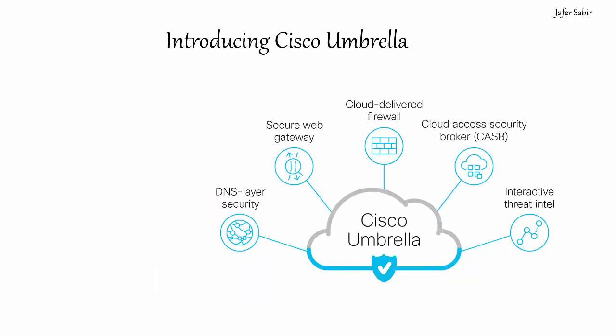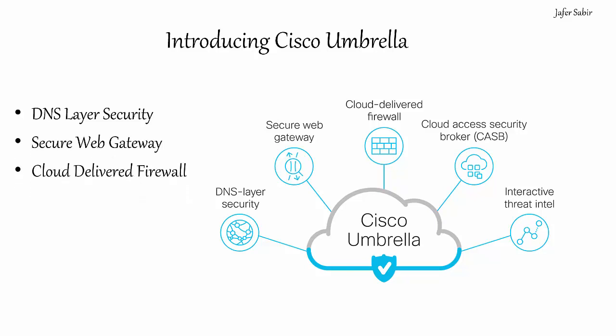Cisco Umbrella is a set of security tools in the cloud, and these tools or services can be purchased in packages depending on what security controls you need. Umbrella falls under the widely known term 'Security as a Service,' or more formally, Secure Access Service Edge (SASE), which also includes SD-WAN and other services. The umbrella service protects users from malicious threats regardless of where they are located. The key features include: DNS layer security, Secure Web Gateway, Cloud Delivered Firewall, and Cloud Access Security Broker.